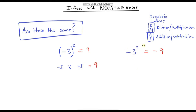Now let's look at -3² without brackets. Using our order of operations, we don't have any brackets, but we do have an index. So we focus on that first — we ignore the negative symbol for now and just look at 3 squared, which is 9. Then we apply the negative, giving us negative 9. The key takeaway is that it is really important to put brackets around negative numbers, especially when dealing with indices, because though they look similar, they give completely different answers.